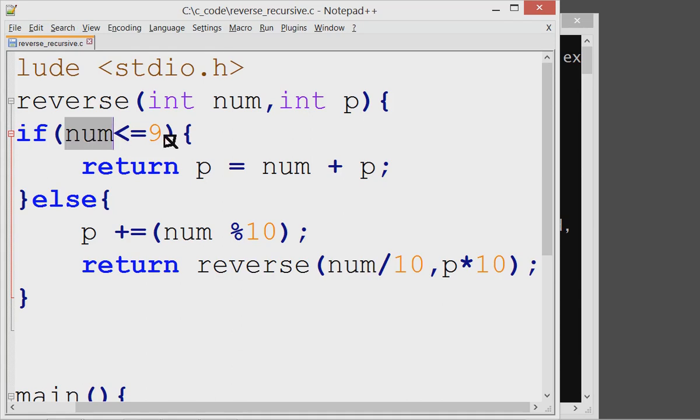So when this function calls itself again, it takes num is now 23, p is 40, this condition fails and it goes here in else.